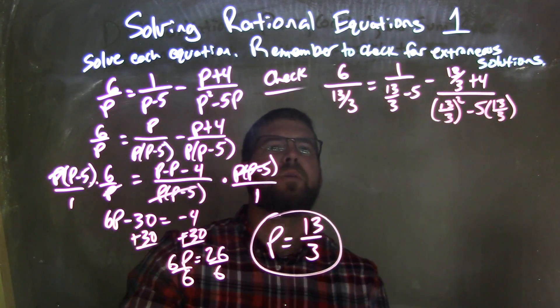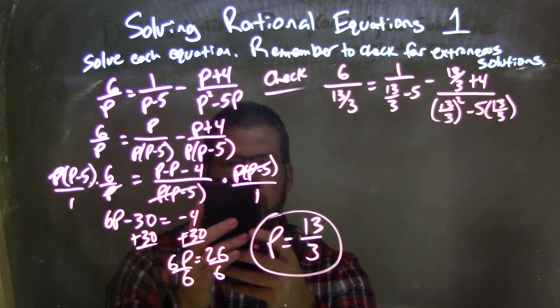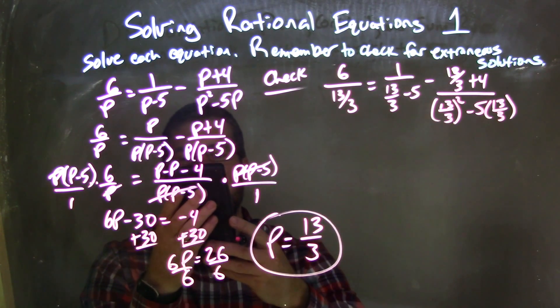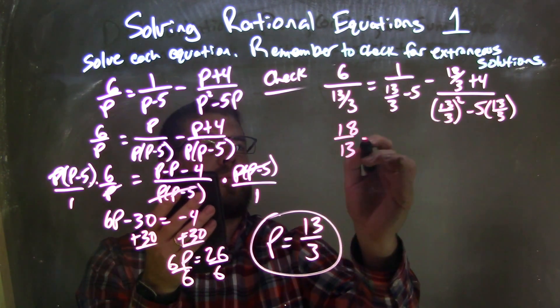So what I'm going to do is I'm going to use my calculator to help me out here. So I have 6 divided by 13 divided by 3, and I have a fraction of 18 thirds here.